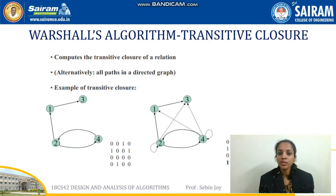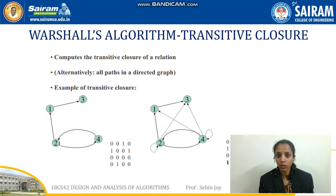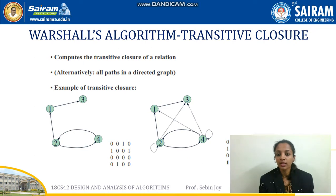An algorithm that uses dynamic programming is Warshall's algorithm, which is used to find the transitive closure. Transitive closure means: if A of B equals 1 and B of D equals 1, then we can say A of D equals 1. We apply this transitive closure concept to find all possible paths in a graph.